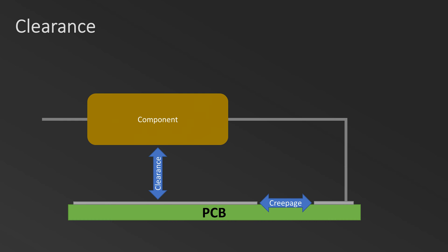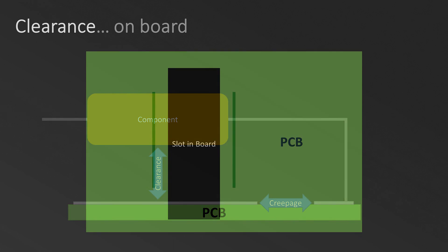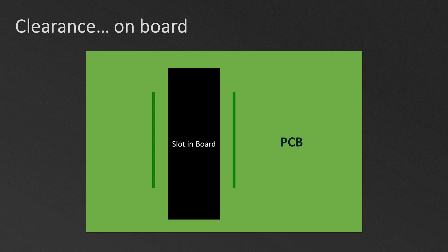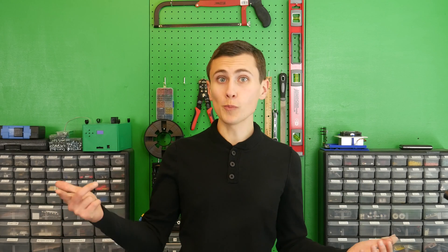There are two common scenarios where clearance applies. Clearance applies when there's a physical gap between two vertically adjacent conductive surfaces, like the lead of a component traveling horizontally above some traces on a PCB. In that case, the distance between the lead and the PCB would be the measured clearance distance. If there's a routed slot in a PCB, the shortest straight-line distance across that slot ends up being the clearance distance. Clear as mud? Super!